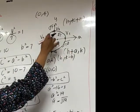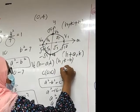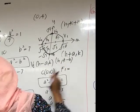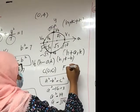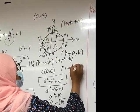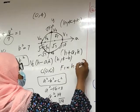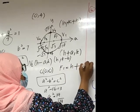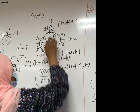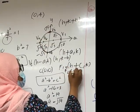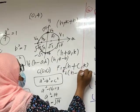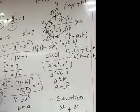For foci, F1 is (h + C, k). For F2, (h - C, k).